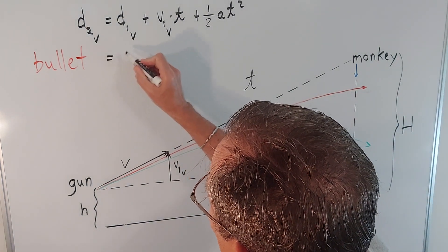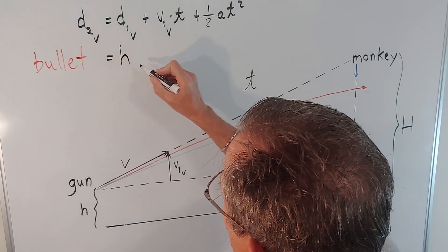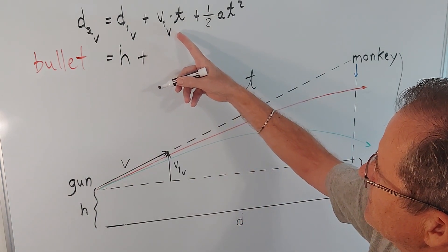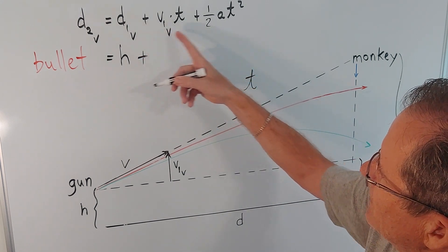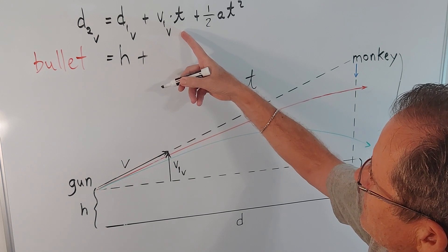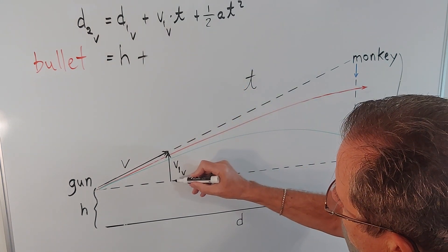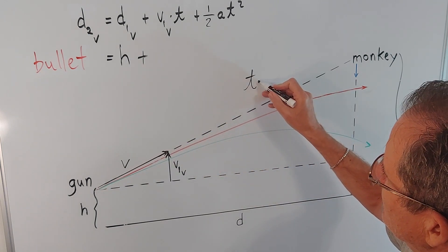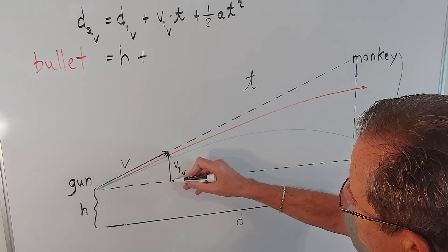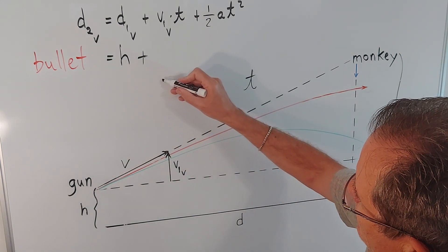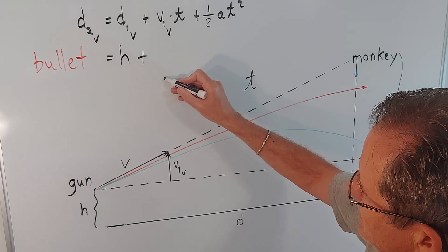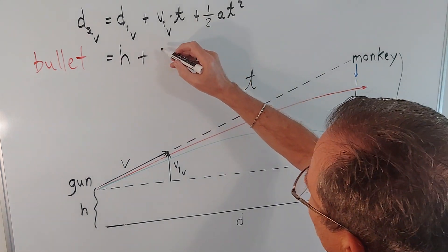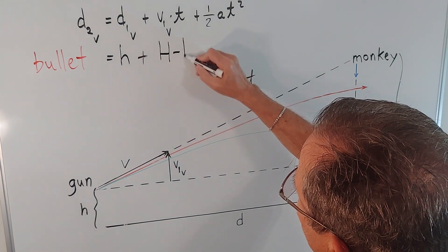Well, for the bullet, the original vertical position is, as we said, h. And now we have to calculate this distance here. These are all distances because you can only add distances. So speed times time gives you distance. This vertical initial velocity times the time in the air will give you the distance from here up to the height of the monkey, originally, because in the absence of gravity, the bullet will travel in a straight line.